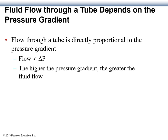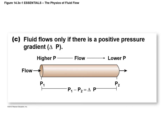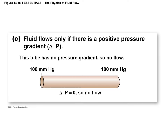Fluid will flow through a tube depending upon the pressure gradient. The fluid flow through a tube is directly proportional to the pressure gradient, so flow is proportional to change in pressure. The higher the pressure gradient, the greater the fluid flow. Fluid will flow only if there is a positive pressure gradient — P1 minus P2 equals a positive change in pressure, giving you a flow rate in that direction. However, if pressure is the same on both sides of the vessel — say 100 millimeters of mercury on each side — there's no pressure gradient, and blood will not move through that vessel.